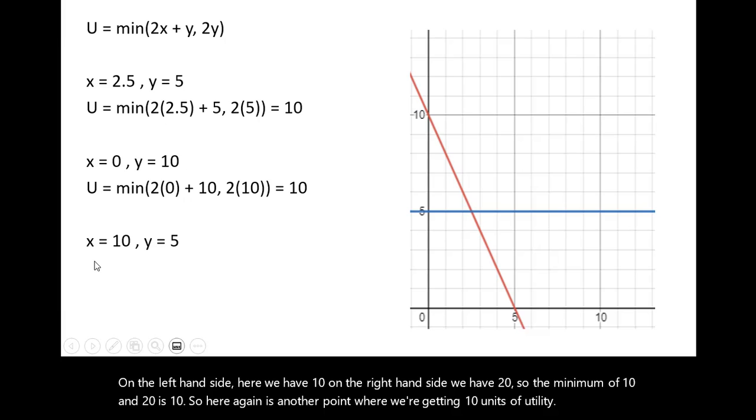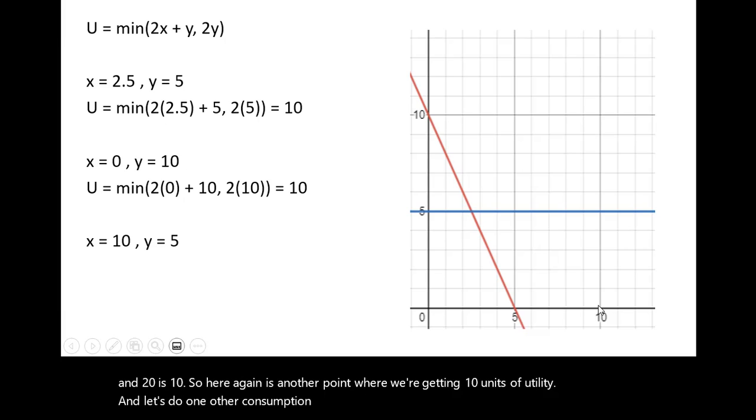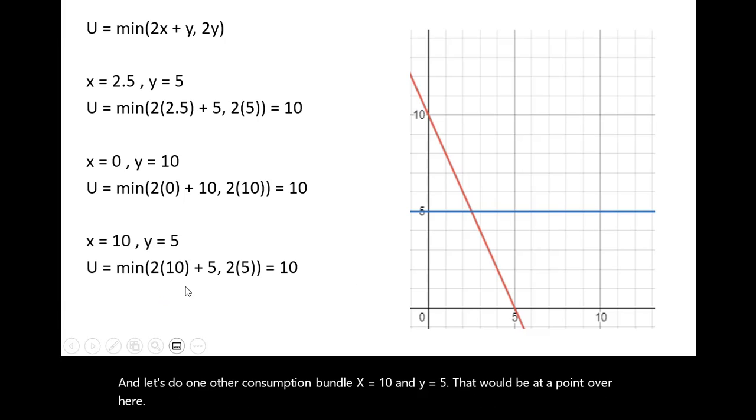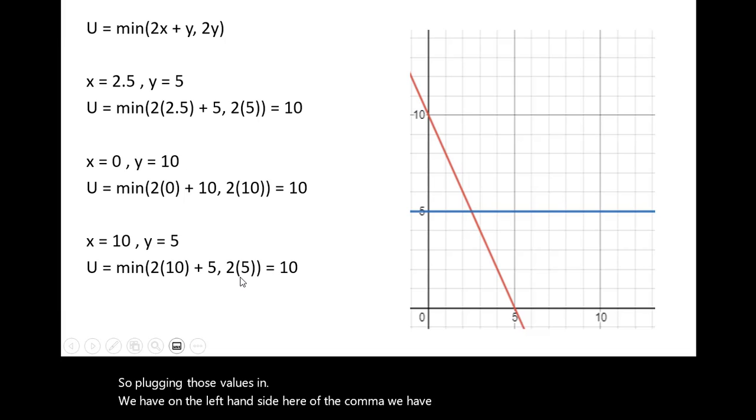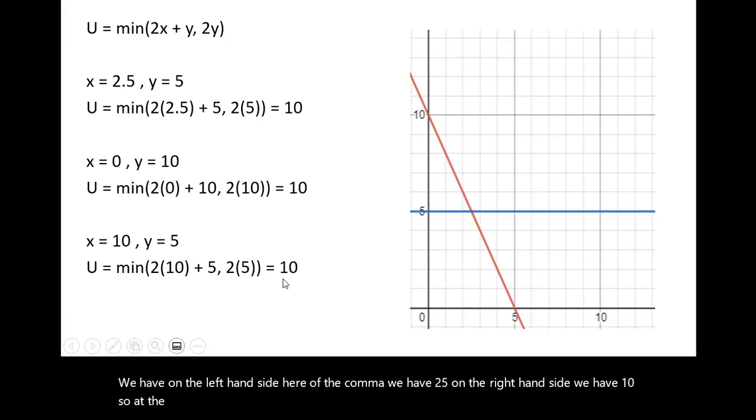And let's do one other consumption bundle, x equals 10 and y equals 5. That would be at a point over here. So plugging those values in, we have on the left-hand side here of the comma, we have 25. On the right-hand side, we have 10. So the minimum of 25 and 10 is 10.